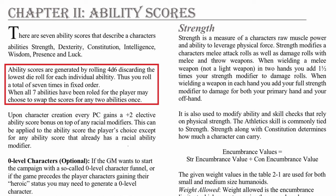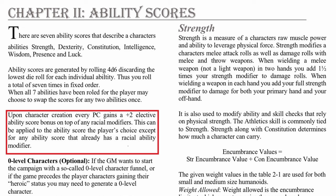We determine the ability scores by rolling 4d6, discarding the lowest die for each individual ability. This means you will roll a total of 7 times in a fixed order. Once you have these scores, you can choose to swap the scores for any two abilities once. Upon character creation, every player character gains a +2 elective ability score bonus on top of any racial modifiers. This bonus can be applied to the ability score of your choice, except for any ability score that already has a racial ability modifier.